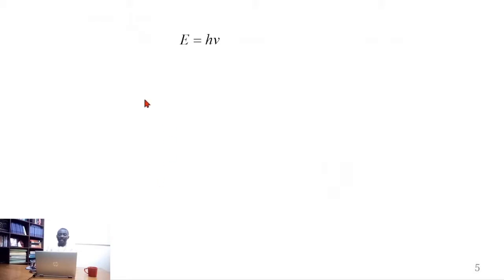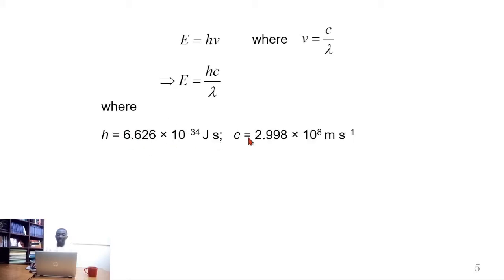So the energy is E = h times nu. When we substitute this expression, we obtain E = hc/λ, and we know that the Planck's constant is this. The speed of light is this.